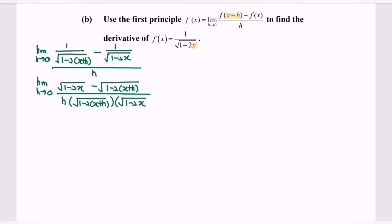So kindly substitute the value of h equals 0, and we notice that we have square root of 1 minus square root of 1, which gives 0 in the numerator. And substituting h equals 0 in the denominator also gives 0. So in this case we have an indeterminate form, so my suggestion is to multiply by the conjugate.